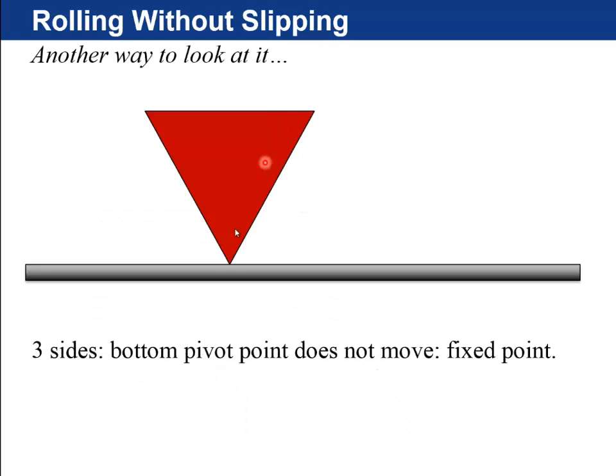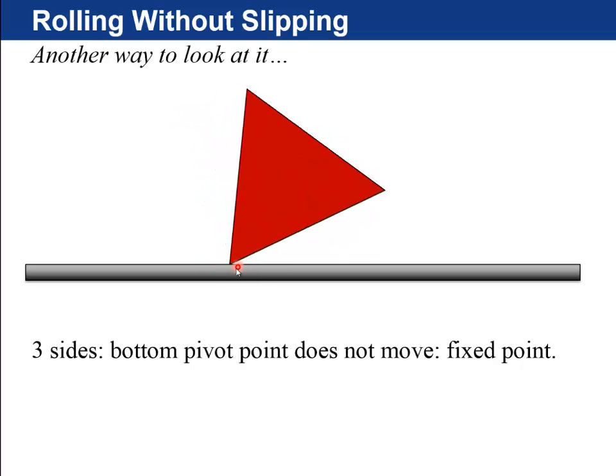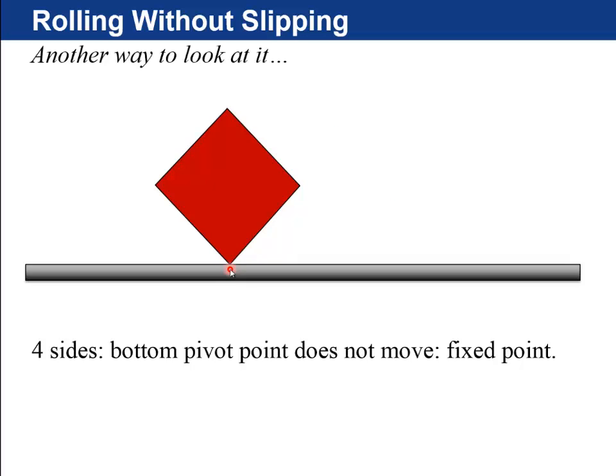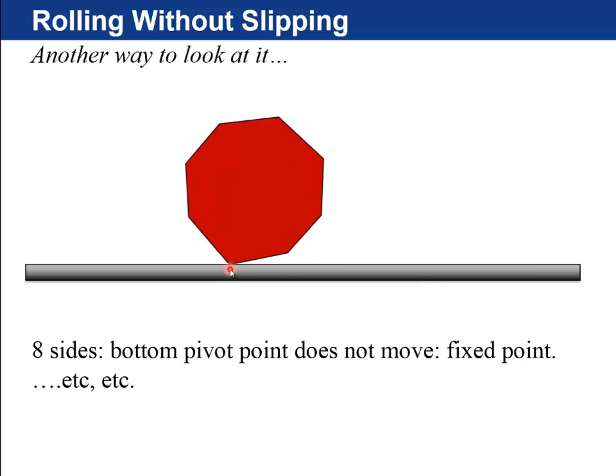And another way to look at it is that let's, instead of thinking about a circle, let's think about a triangle, it has three sides. If you imagine it rotating, well, this bottom pivot point does not move. That's a fixed point. What if you had four sides? Rotate it. Again, the pivot point does not move. What if you had eight sides? Rotate it. Again, the pivot point does not move.